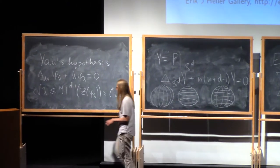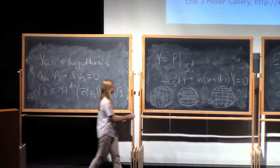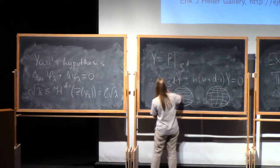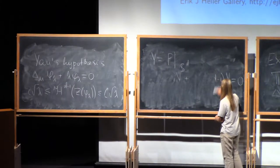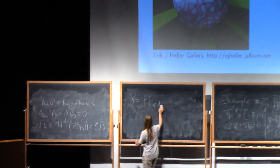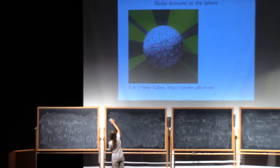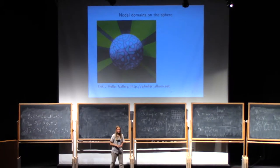What I'm going to prove is much more mild result, but it already tells you that looking at the picture, you should be able to see something about eigenvalue. So what I want to show you is that we know the density of the zero set.